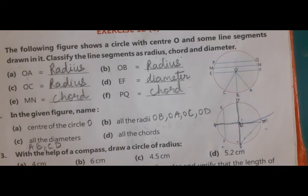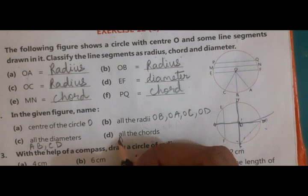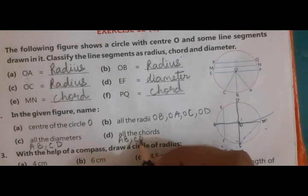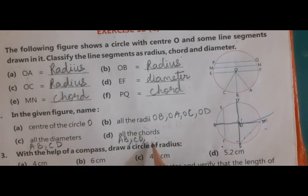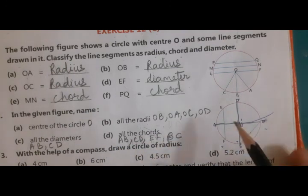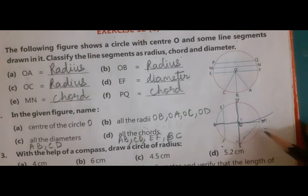All the chords. Now, diameter is also considered as a chord. So AB will also be there, CD is also there. Then EF and BC.